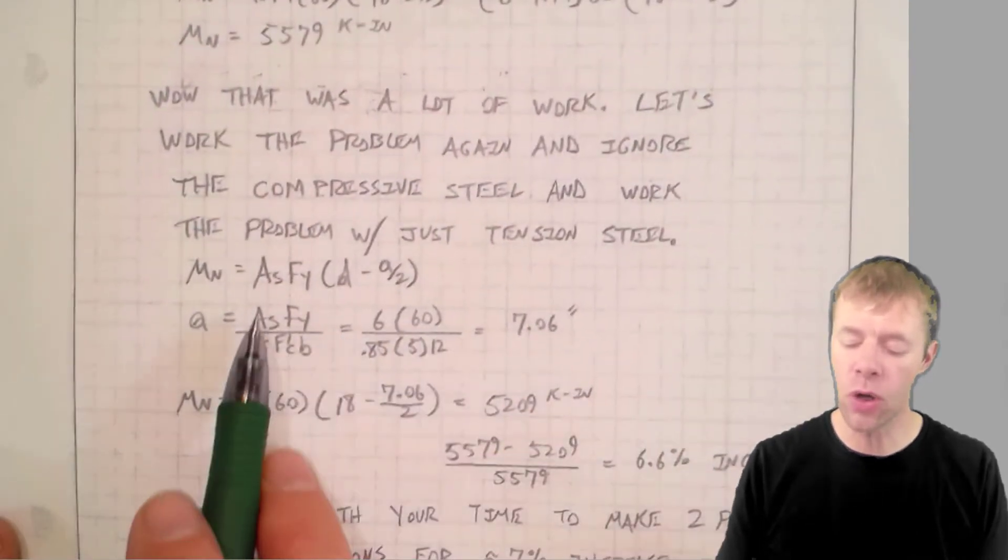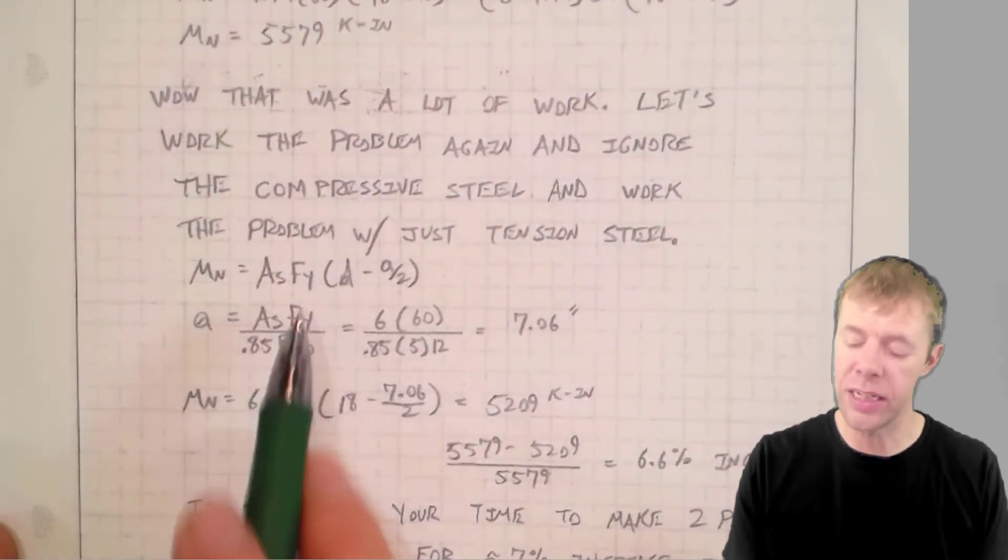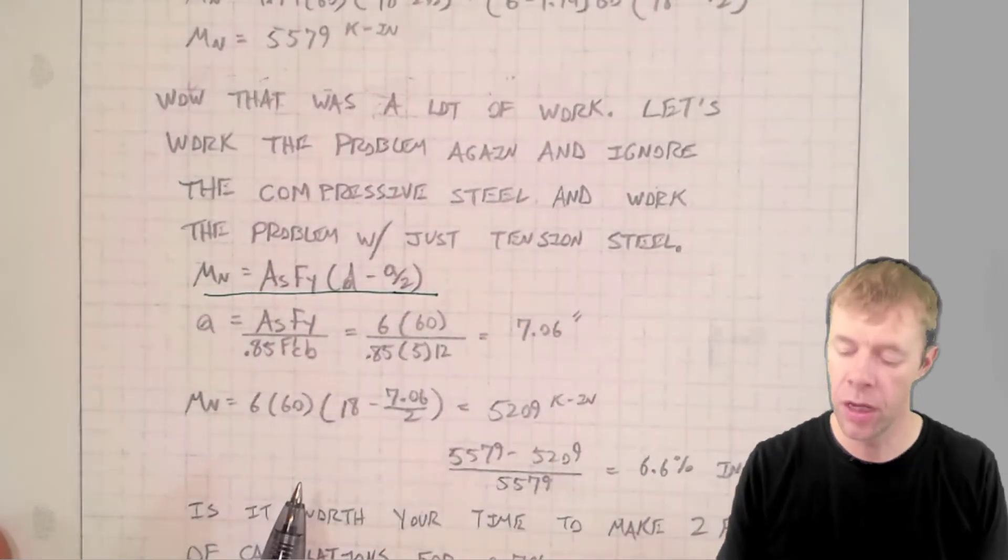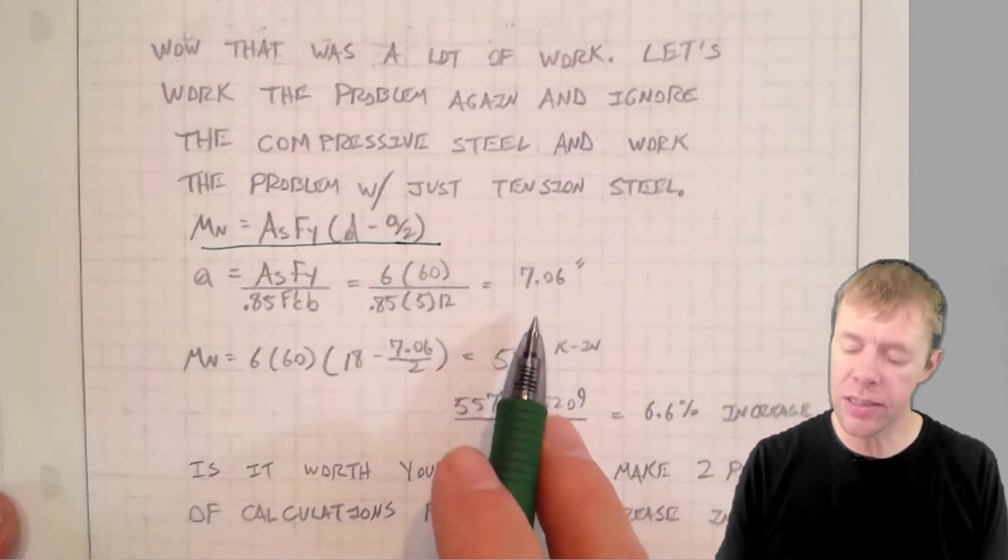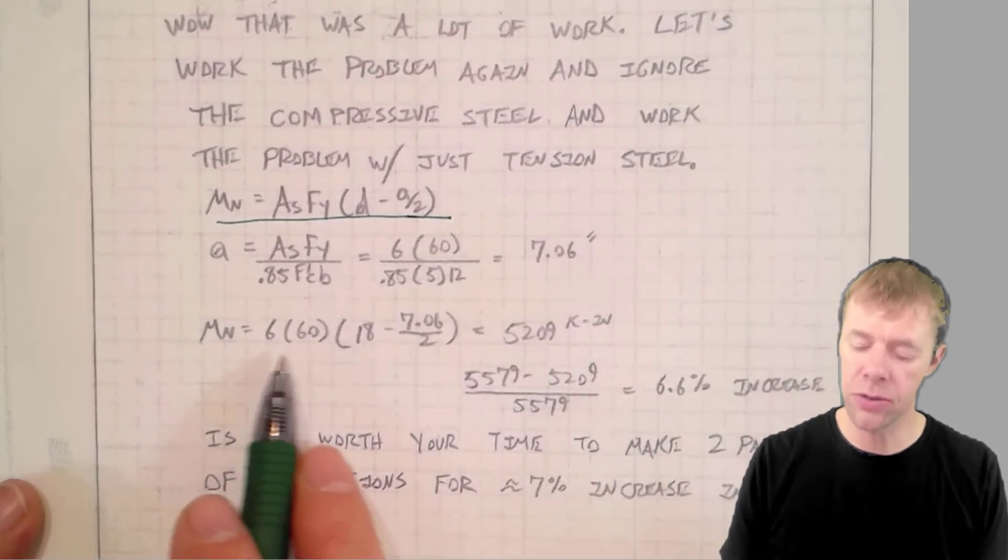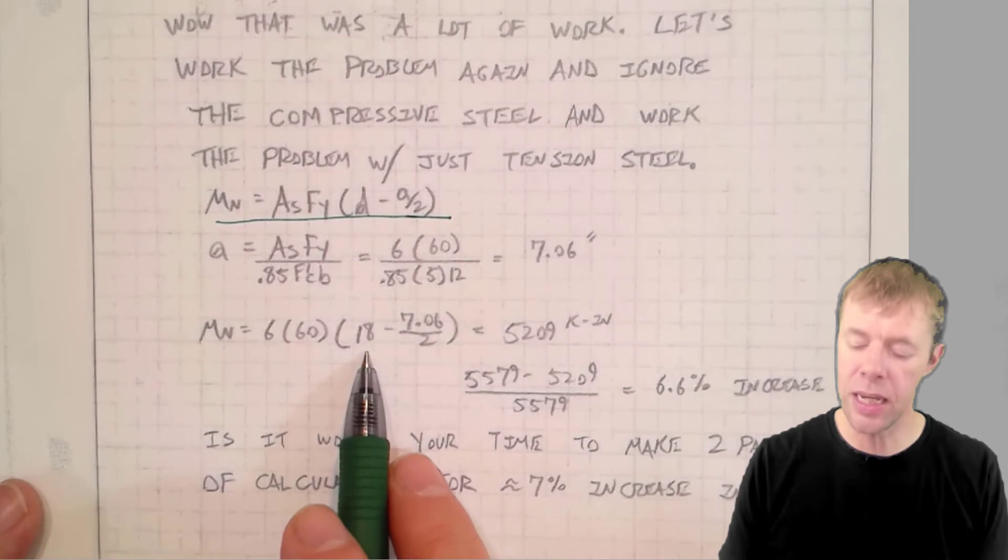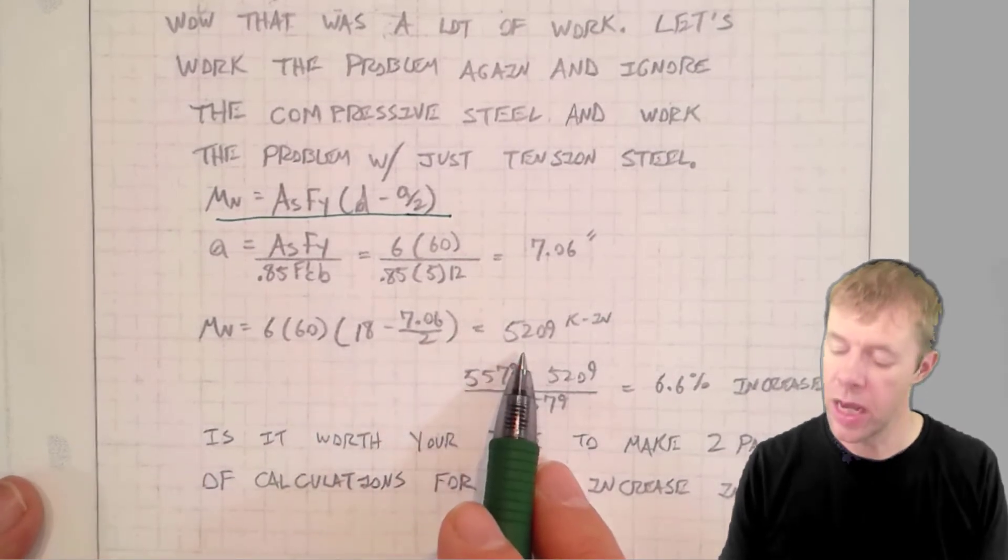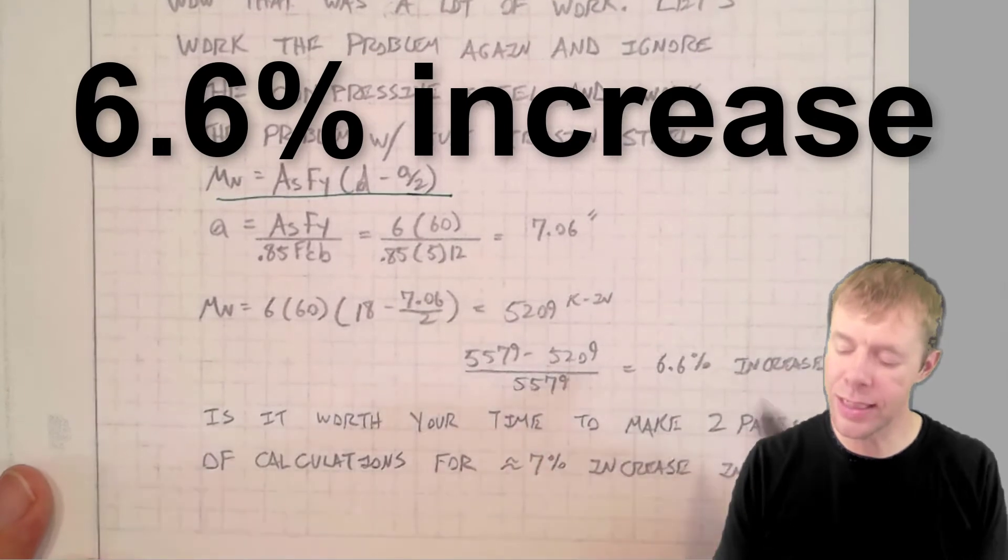If we do that, we can just use our normal, good old, easy, nice, beautiful ASFY times D minus A over two equation. We solve for our A here. We get 7.06. Then we plug in for our MN, our AS, our FY. That's our D minus A over two. We get 52.09 kip inches. That's a 6.6% increase.